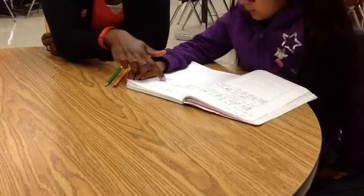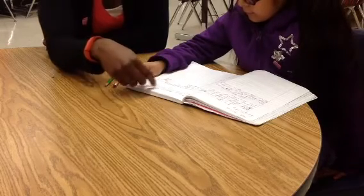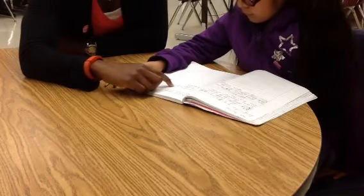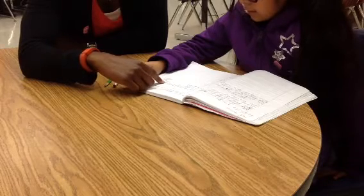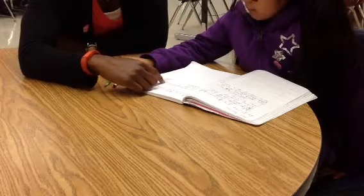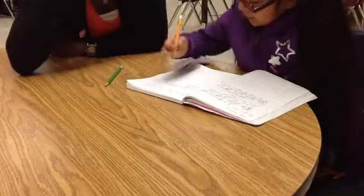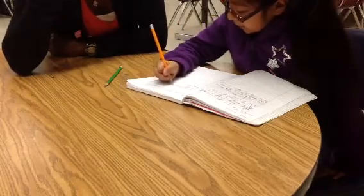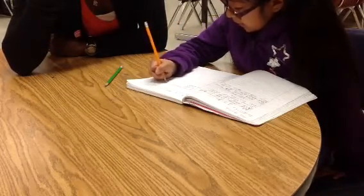I like the way you use this number line. One thing good mathematicians do, they label what their jumps are, so that we know for sure how many are in between 16 and 22. How could we label that there? By doing 17, 18, 19, 20, 21, 22. Excellent.